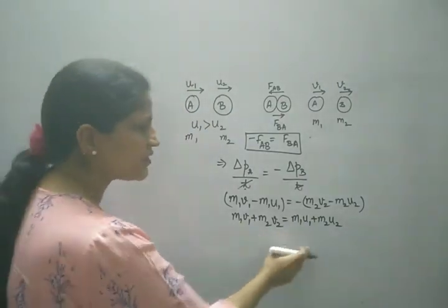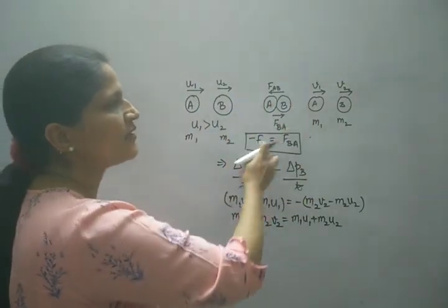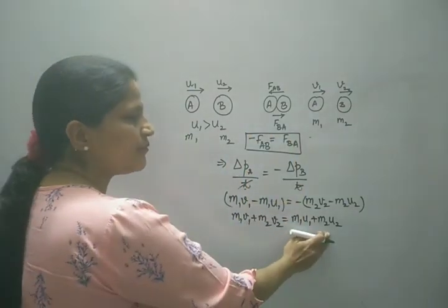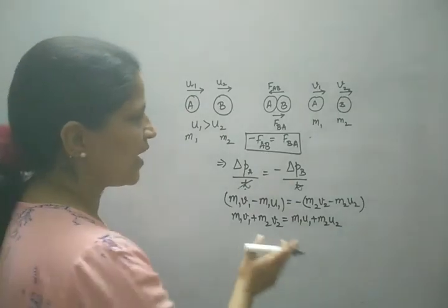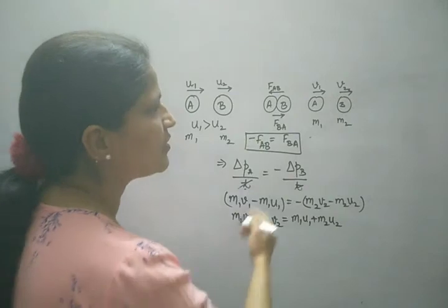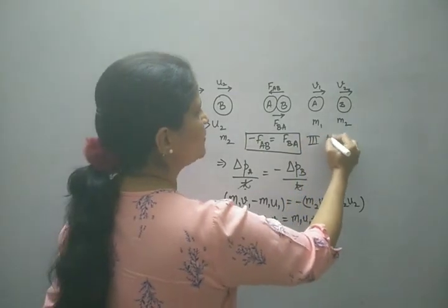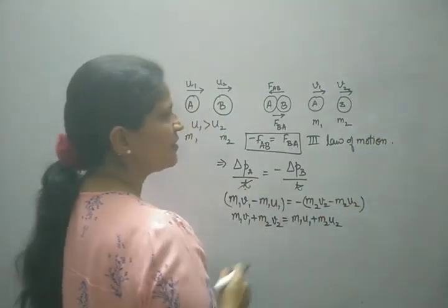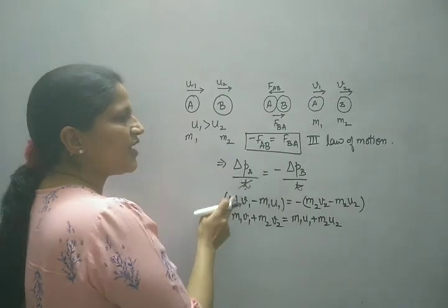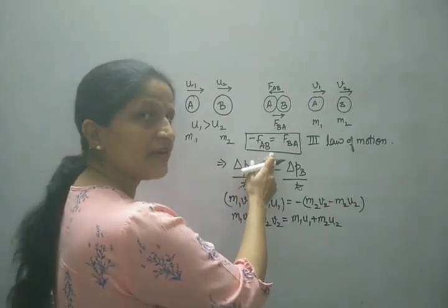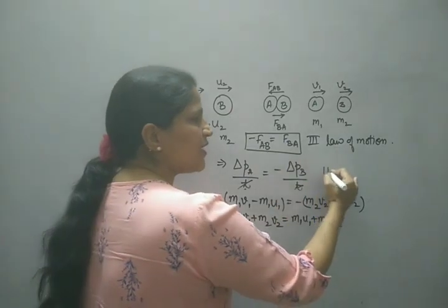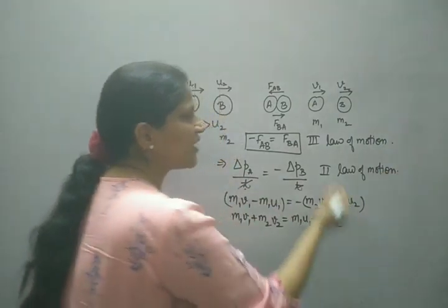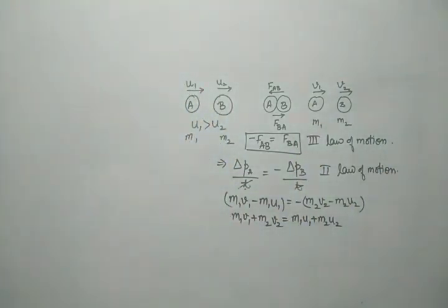This shows that when there is no external force acting on the system and only internal interactions are taking place, then total momentum before and after interaction remains the same. How have we arrived at this conclusion? We used the third law of motion and the formulae for forces came from the second law of motion. We used two laws to prove the conservation of momentum principle.